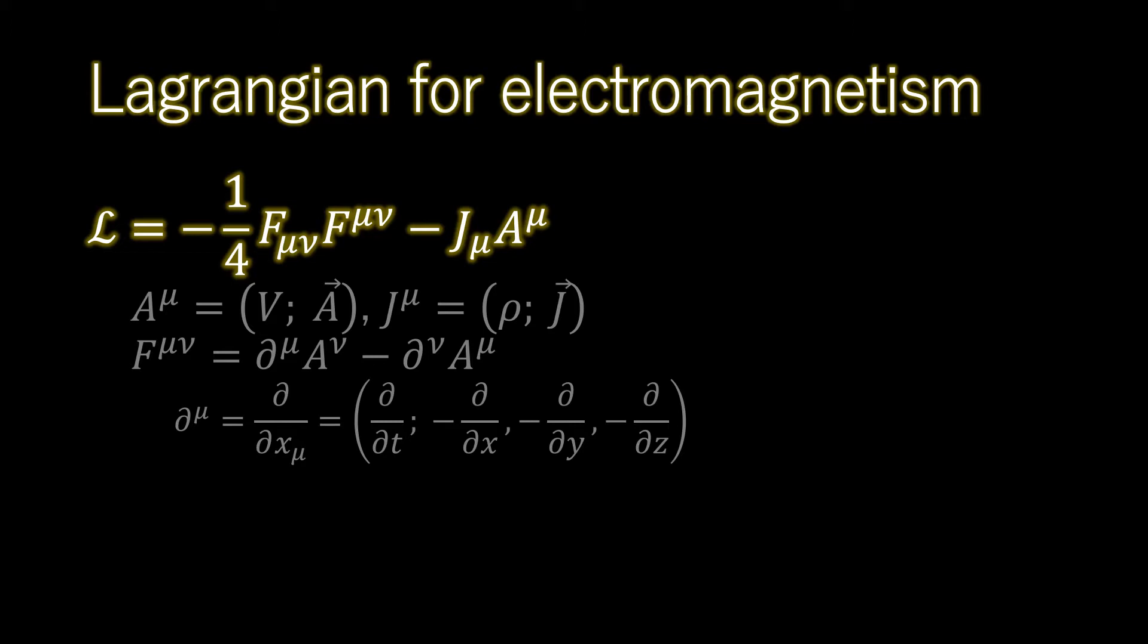For electrodynamics, the photon is the quantum of the electromagnetic field. It is represented by the vector potential field A mu. The current 4-vector is J mu. The Lagrangian contains the fundamental interactions of the theory.